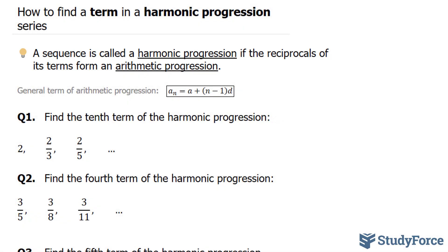The general term for an arithmetic progression is shown below. And the first question reads, find the tenth term of the harmonic progression 2, 2 over 3, 2 over 5.